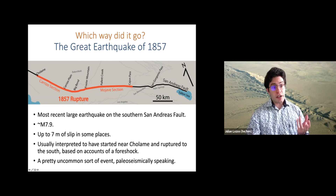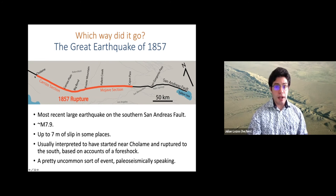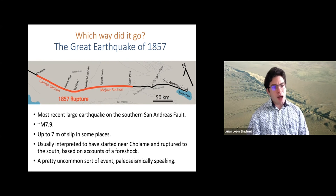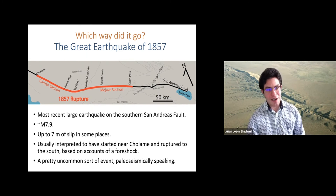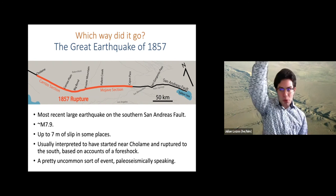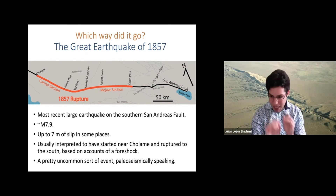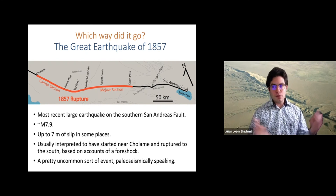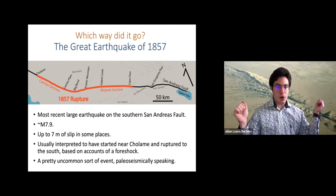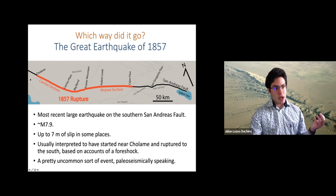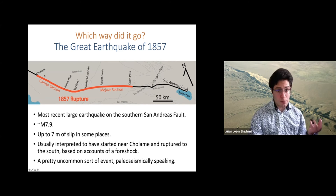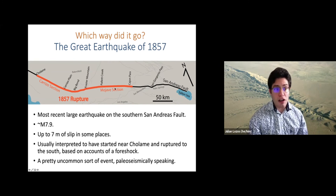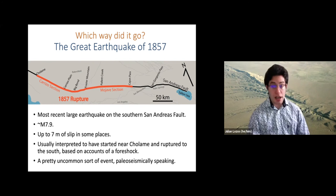Usually this is inferred to have started near Cholame and ruptured to the south because there was a foreshock up in that area earlier on the same morning of January 9th, 1857. But my personal thought — especially looking at something like Ridgecrest where there was a 6.4 one day and then a 7.1 on an adjacent fault the next day — you can have earthquake sequences that don't start in the same place. Just because there was an earthquake up there doesn't necessarily mean the second earthquake started in the same place.